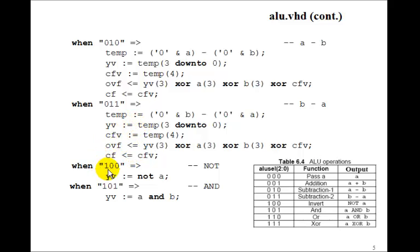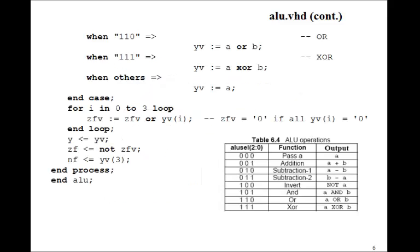When ALU Select is 4, we want to invert it, do a not A. So we just say Y variable is not A. When it's 5, we want to do A and B. That's just Y variable gets A and B. When it's 6, we want to do an OR. Y variable is just A or B. When ALU Select is 7, then Y variable is just A exclusive ORed with B.